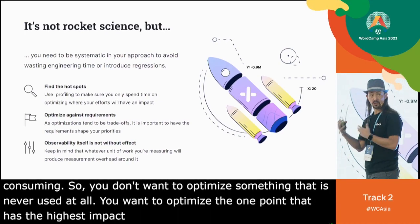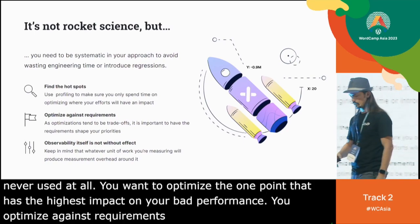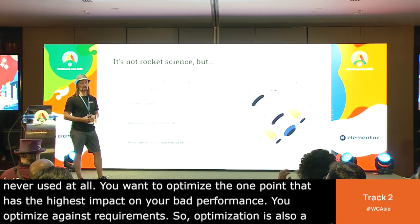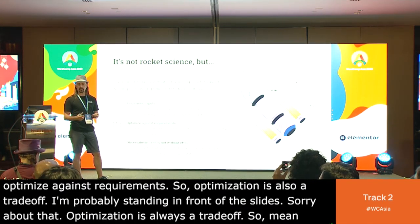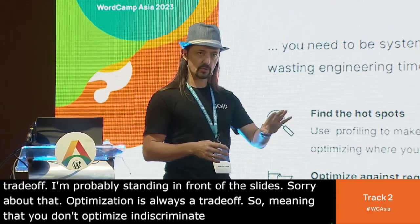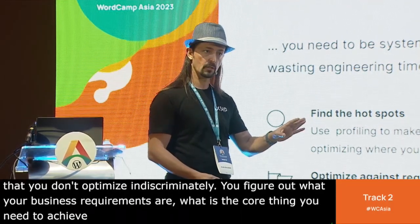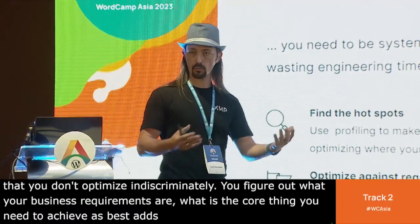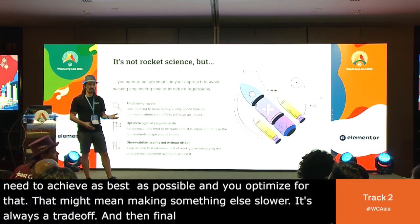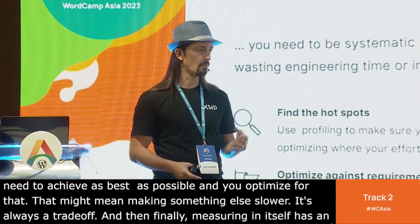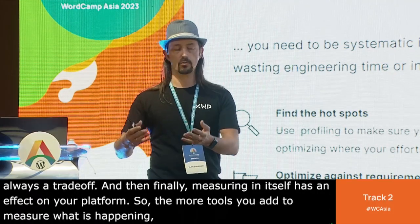You optimize against requirements, because optimization is always a trade-off. You figure out what your business requirements are, what is the core thing you need to achieve as best as possible, and you optimize for that — which might mean making something else slower. And measuring in itself has an effect on your platform. The more tools you add to measure what's happening, the slower your platform becomes as well, because you add overhead. That's why it's important to always use adapted tools.